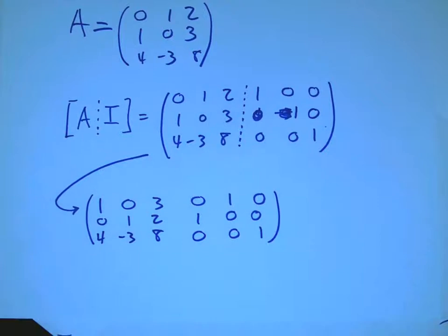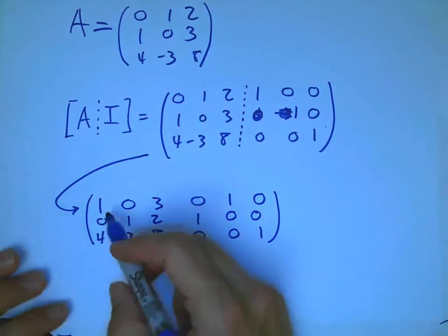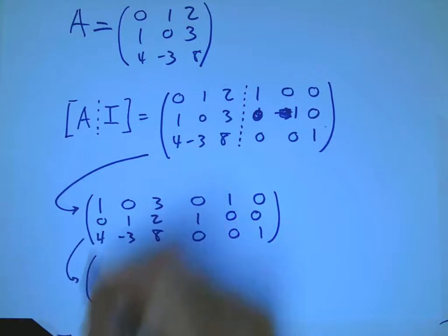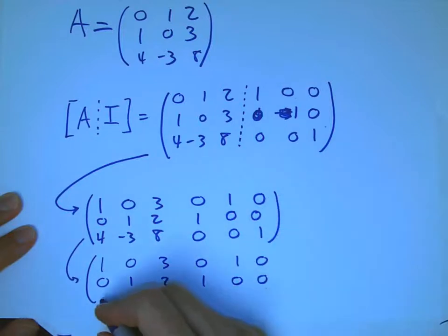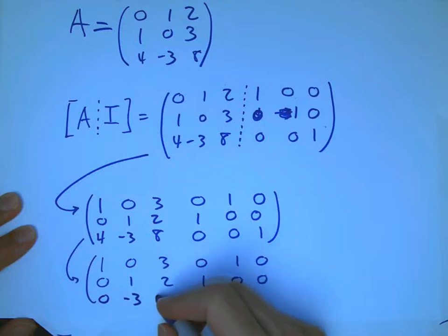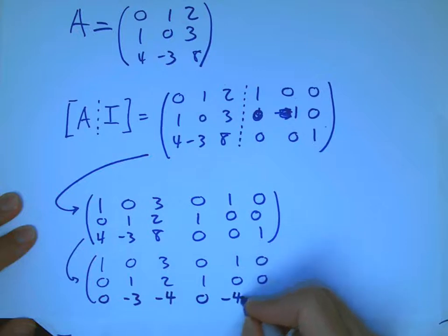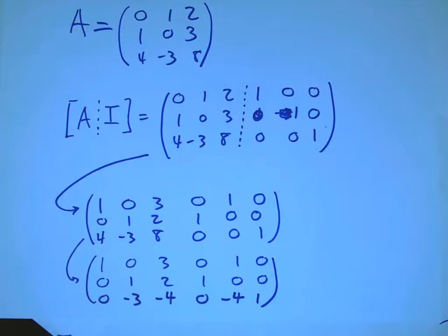And now, the nice thing about that is that, oh, hey, there's a 0 here. That reduces my workload a little bit. I'm not going to do anything more to the first row for a while. I don't need to do anything to the second row yet. And I'm going to take 4 times the top row and subtract it from the bottom row. And I'm going to get 0. This happens not to change. This turns into minus 4. This is minus 4. And this is a 1.